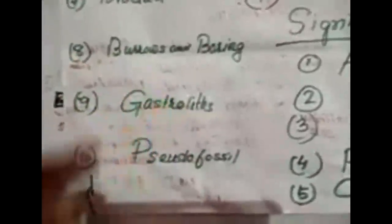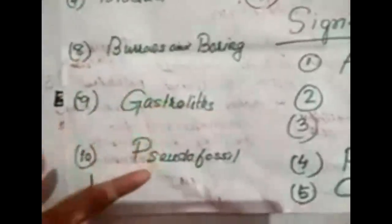Gastroliths. A gastrolith is a stone found in the body cavity of ancient reptiles and other organisms. These stones were used for feeding, digestion, and grinding of food. This type is called a gastrolith.